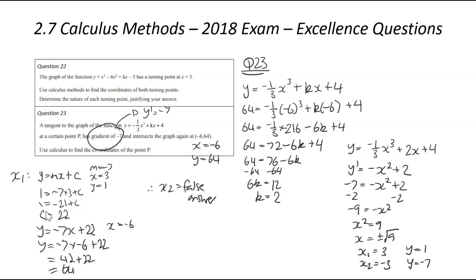So the coordinates of this particular point — the coordinates of the tangent point — were when x equals 3. Therefore point P is (3, 1). That wraps up the excellence questions for the 2018 calculus exam. Hopefully you found it useful. Let's keep practicing.